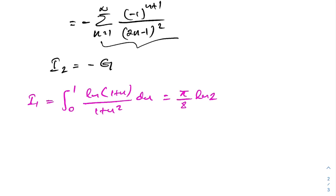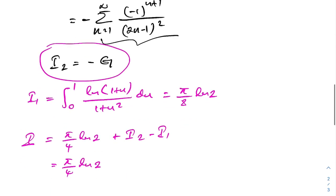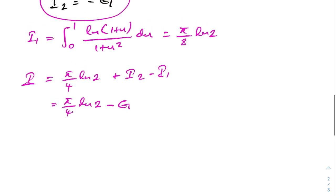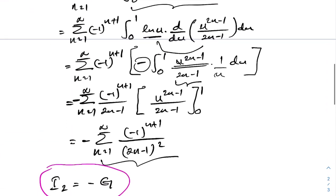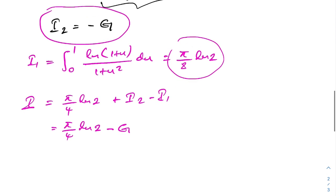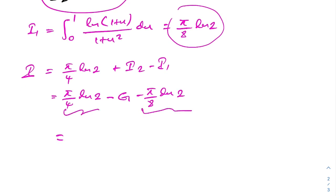We can now conclude: I equals pi over 4 times natural log of 2 plus I2 minus I1, which is pi over 4 times ln 2 plus (minus G) minus pi over 8 times ln 2. Simplifying, the natural log of 2 terms give pi over 8 times natural log of 2, so the final answer is pi over 8 times natural log of 2 minus G. If you like this type of video, please subscribe to the channel. Thank you for watching.